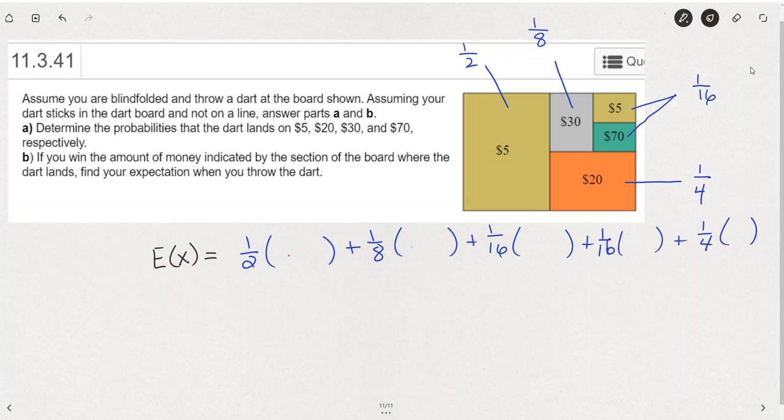So the first step is going to be to calculate what fraction, using some geometry, of the board is covered by each value. It looks like this $5 mark is half, and the $20 mark is a quarter.